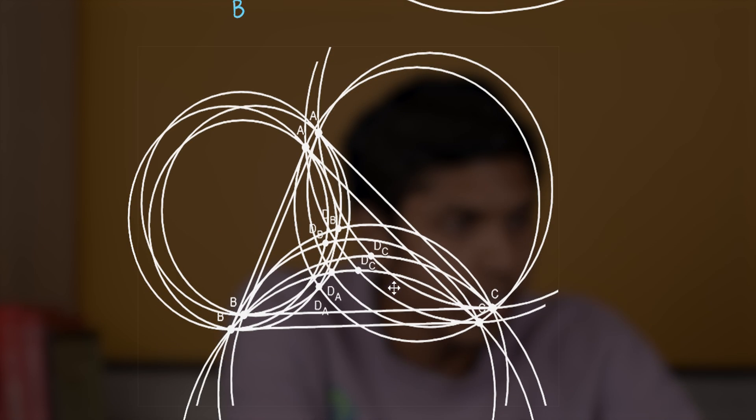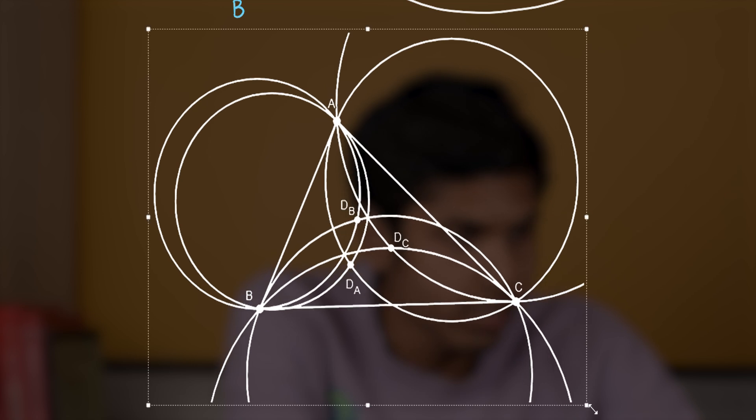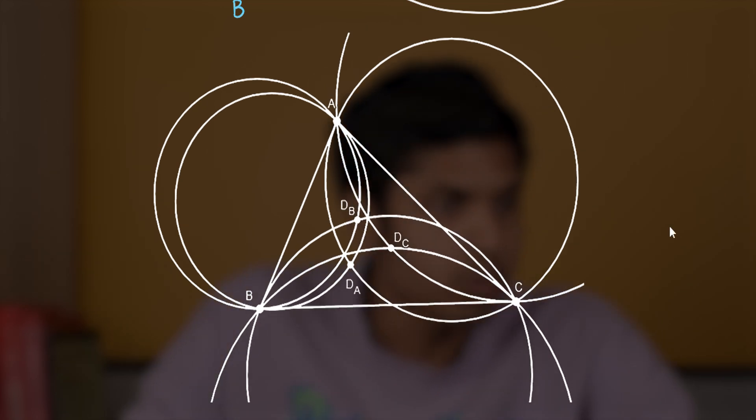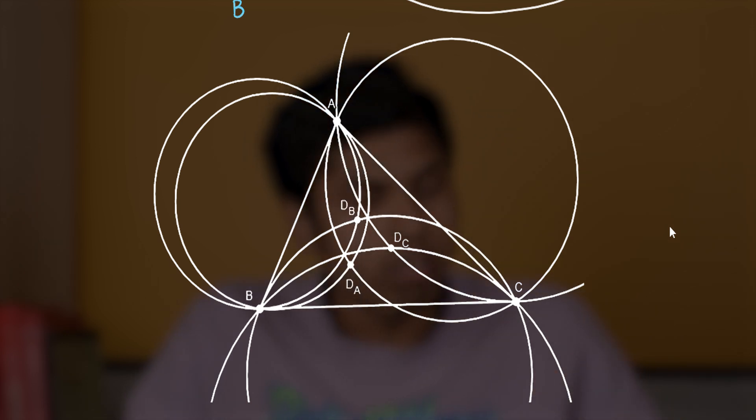Well, here you can see the three circles. Well, it is actually two circles per vertex. And, they all will define D_A, D_B, D_C.